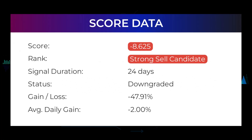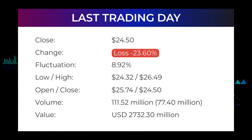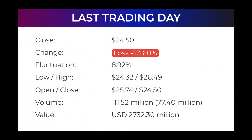In this section you will get some information about the current Snap performance to better understand where the stock is right now. In our systems, the Snap stock currently holds a minus 8.625 score and our system has ranked Snap a sell candidate since December 31st, 2021. In this period the stock has had a loss of minus 47.91%, an average return of minus 2% per day. Our last headline reads: very red day for Snap Incorporated stock price after minus 23.60% fall in Thursday trading session. The stock price fell from $32.07 to $24.50 and has now fallen three days in a row.